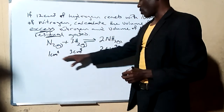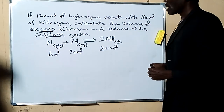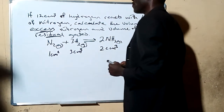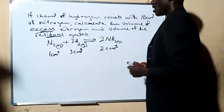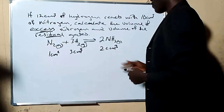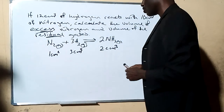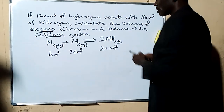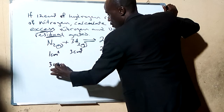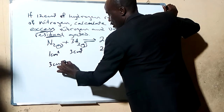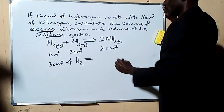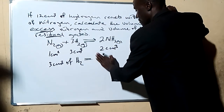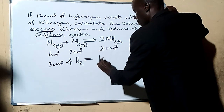So based on this, we have hydrogen to be 12 cm³. We want to know how many cm³ of nitrogen will react with it. From the equation, 3 cm³ of hydrogen will react with 1 cm³ of nitrogen gas.